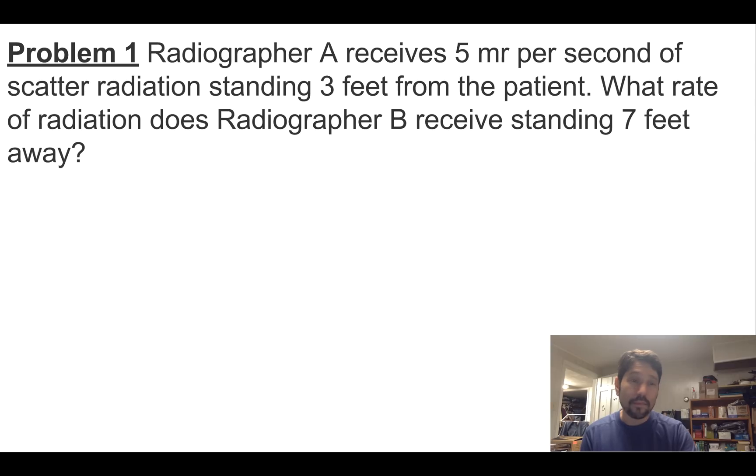And all these problems we're going to do, we're going to treat as point source. So here's the first problem. Radiographer A is receiving five millirads per second of scatter radiation standing three feet away from a patient. What rate of radiation does radiographer B receive if they're standing seven feet away? And we're going to treat the patient scatter as a point source.